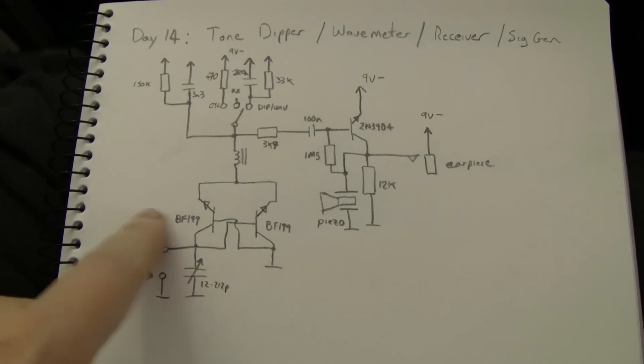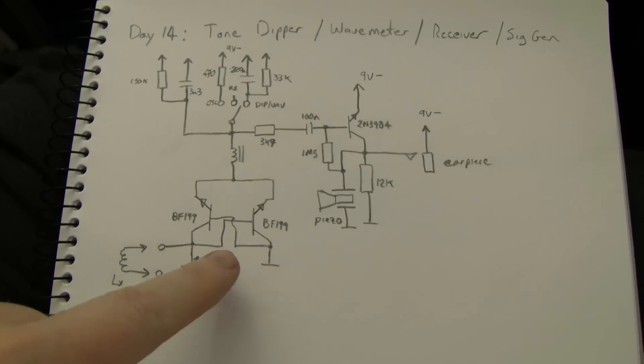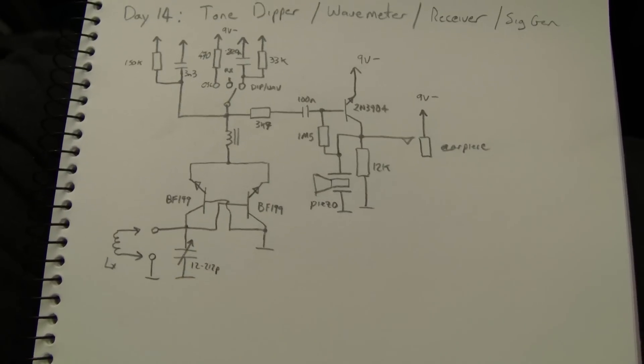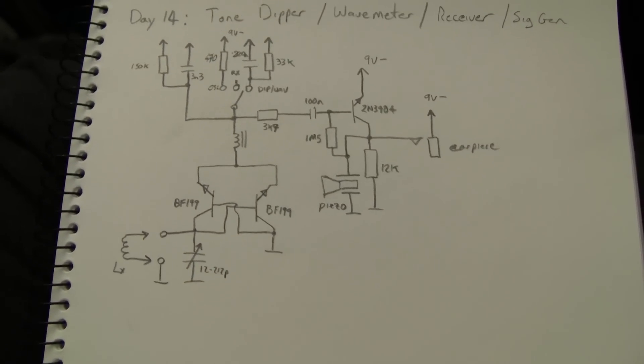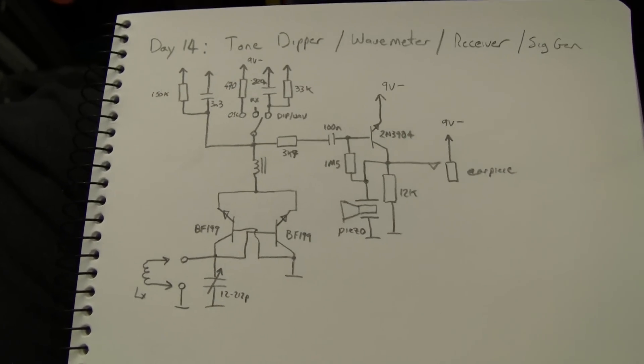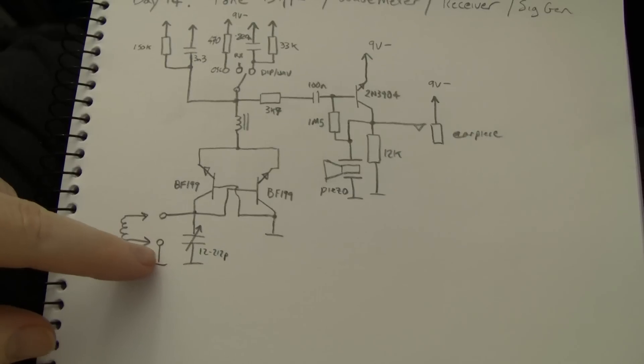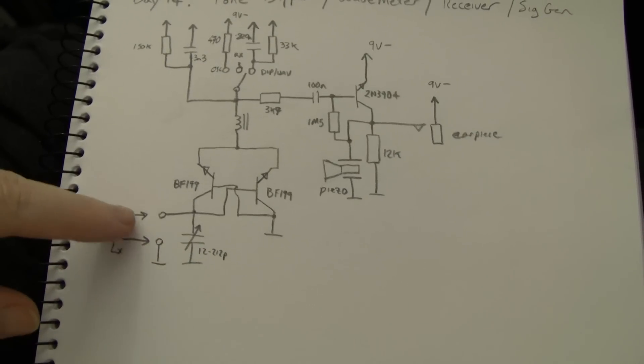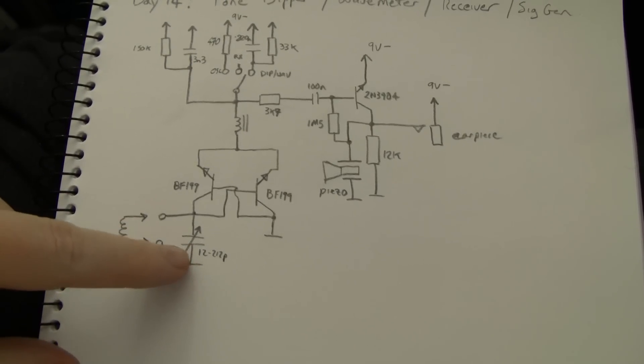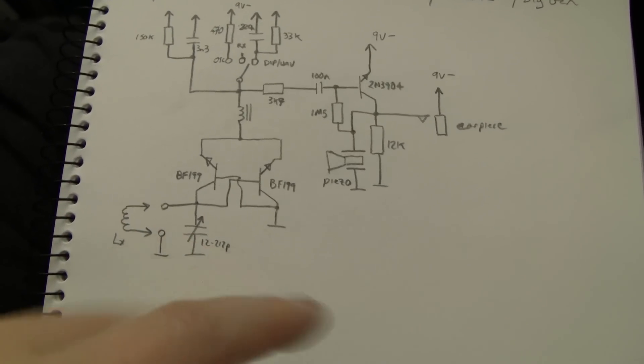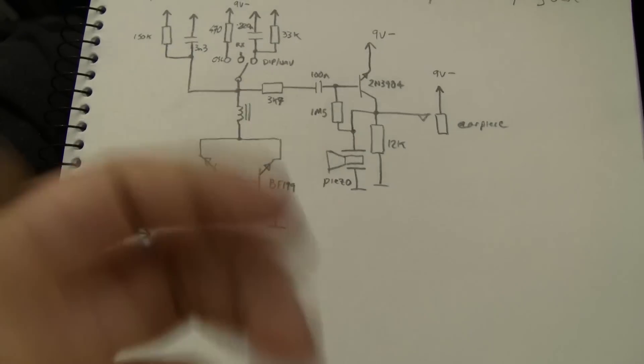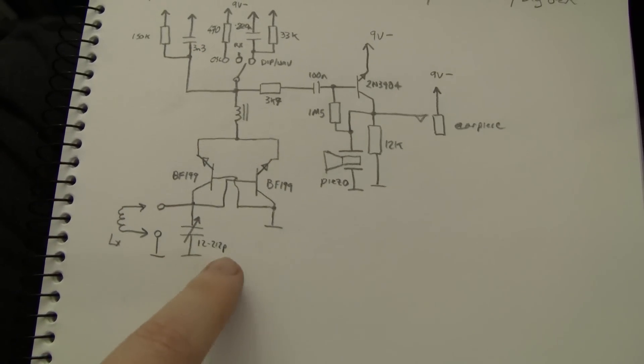The BF199 is an NPN transistor, but I've drawn everything because I made the circuit with a common positive rather than a common negative. The reason why I did this slightly unusual layout is because I wanted to be able to ground the connector for the coils and the polyvaricode's rotor to the ground plane to minimize touch capacitance effects on the circuit.